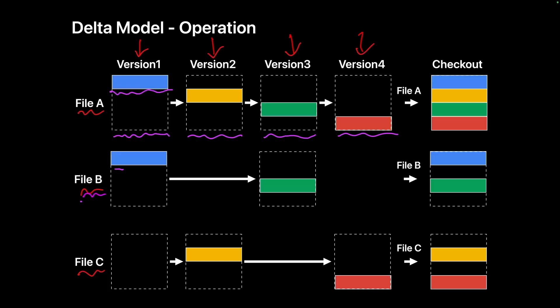Looking at File B: initially it has some content. During the second save, there were no changes to File B, so no modifications were recorded. In the third version, there were changes, so those were recorded. In the final version, there were no changes again, so nothing was recorded. This is how the delta model stores data by comparing and saving only the differences from the previous versions.